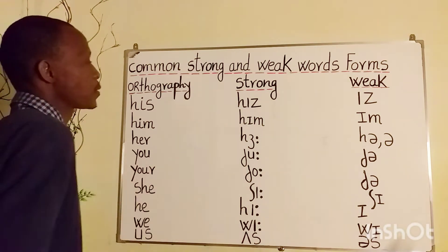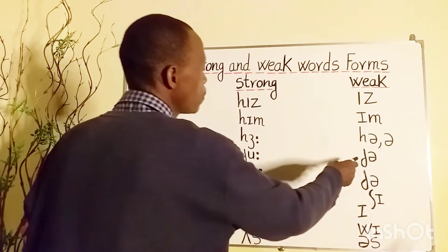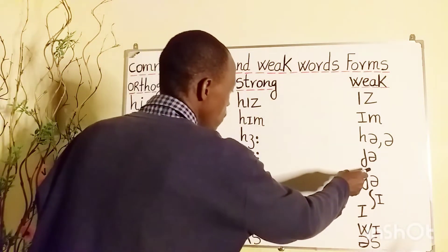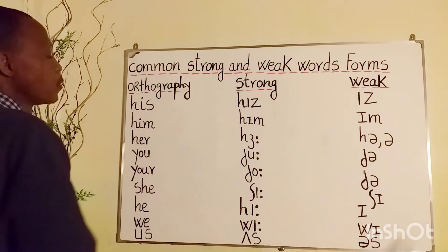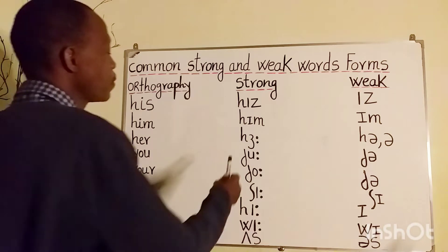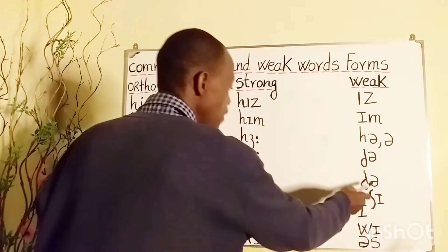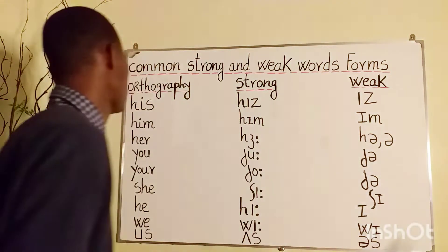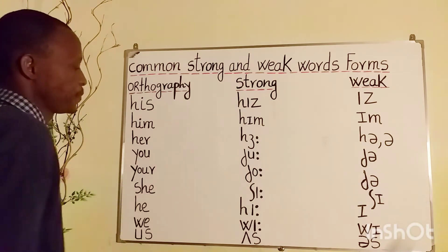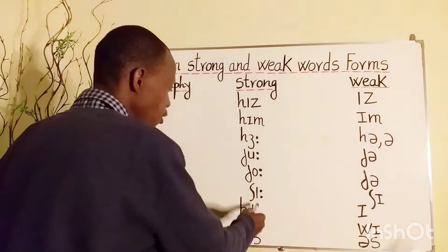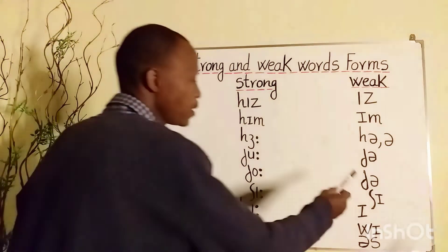'You' — strong form: you, weak form: ya. 'Your' — strong form: your, weak form: ya. 'She' — strong form: she, weak form: she.